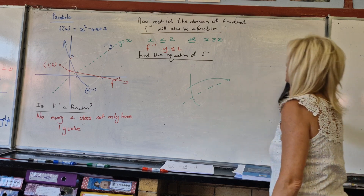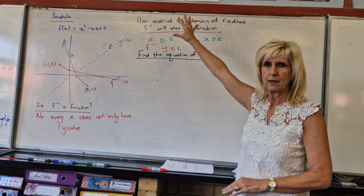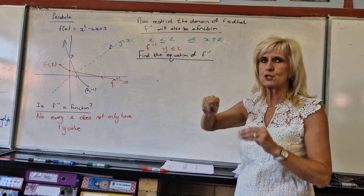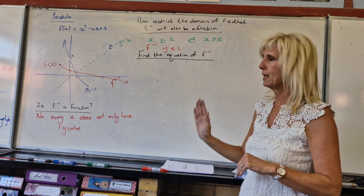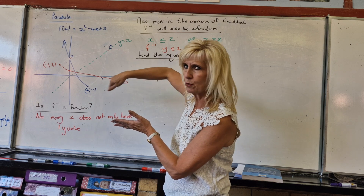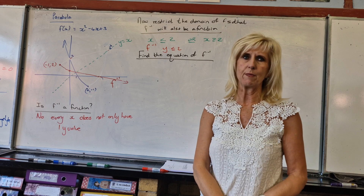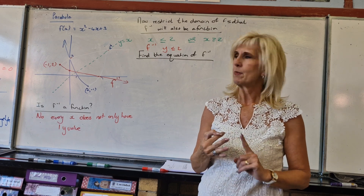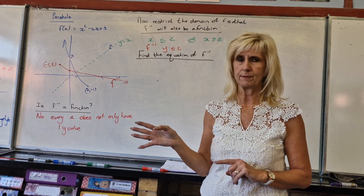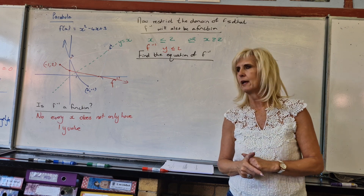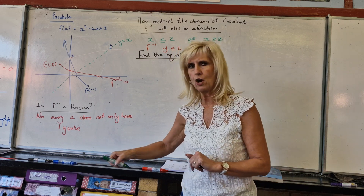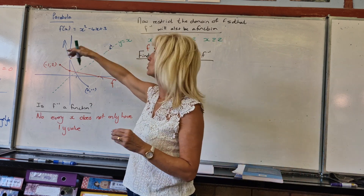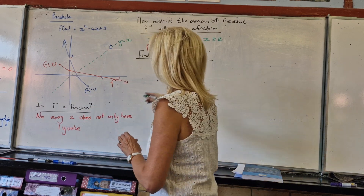Let's get the equation. This is a specific question that gets asked: find a restriction on the domain so that the inverse will be a function. The inverse will never be a function unless you restrict it — when it falls on its side, the parabola will always fail to be a function. The inverse of a parabola doesn't have a name. The inverse of a straight line is still a straight line, but the parabola's inverse has no name. To find the equation of the inverse, x changes to y and y changes to x.